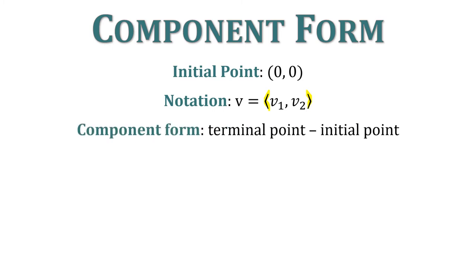Alright, component form is how you're going to see vectors written most often. Component form, we need the initial point to be (0, 0), and our notation is going to be V1 comma V2. It's just going to look like an ordered pair, with the exception that instead of using parentheses, we have these angled brackets. That's what lets you know it's a vector. So what if we have a vector where the initial point is not (0, 0)? Well, we can take the terminal point and subtract the initial point to get component form. So we're going to see that here in just a second.